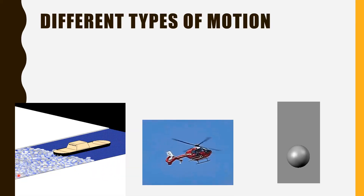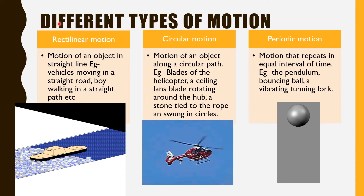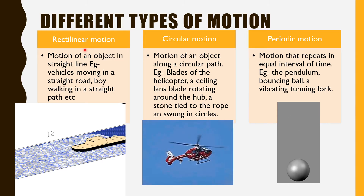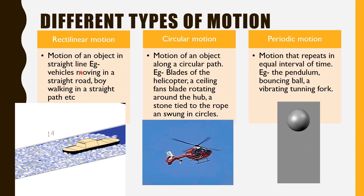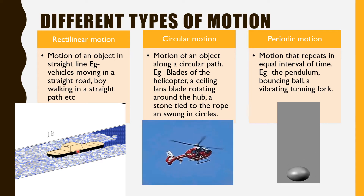There are different types of motions. They are rectilinear motion, circular motion, and periodic motion. Rectilinear motion is the motion of an object in a straight line. Examples include vehicles moving on a straight road, a boy walking in a straight path, and a ship moving in a straight path through a river.